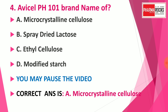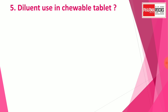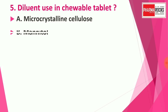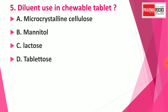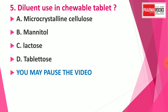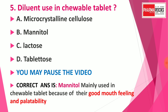Question number five: Diluents used in chewable tablets — Option A: microcrystalline cellulose, Option B: mannitol, Option C: lactose, Option D: tabletos. You may pause the video to note down the correct answer. The correct answer is Option B: mannitol. Mannitol is mainly used in chewable tablets because of its good mouth-filling and palatability properties. Mannitol is the key ingredient in chewable tablets.